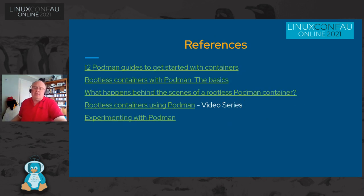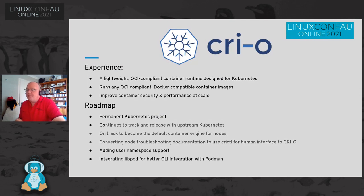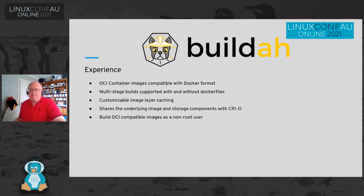I've got a bunch of useful references here. Some of these have follow-up links to other guides, and there are some really good video series on using rootless containers with Podman. There's a lot of experimenting going on ahead of the Podman version 3 release, so please go and have a play. At the end of the deck, I've got a little bit more information about CRI-O and its value. I've also linked to Buildah, because Podman is about running a container, and Buildah means any user can build a container — it builds standard OCI-compatible container images as a non-root user. So if you're on your local workstation with just a non-root shell, you can build them with Buildah and run them with Podman without needing any special access.